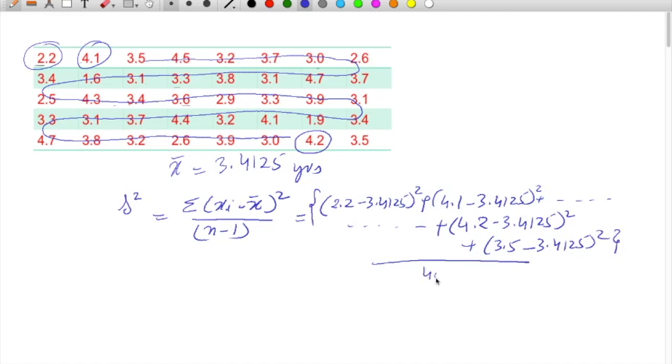Divided by 40 minus 1. That comes about 19.264 upon 39, gives you a value 0.4939 approximately.